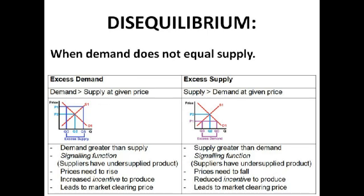To get rid of this excess demand, prices need to rise. As prices rise, there is an increased incentive for firms to produce because they can make more profit. So firms produce more, leading to an extension of the supply curve and a contraction of the demand curve. This leads to the new market clearing price at P2, which is the price at which all goods supplied are demanded.